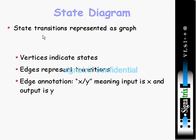Now coming to state diagrams. State transitions are represented as a graph. Vertices indicate states, edges represent transitions, and edge annotation x/y means input is  and output is .